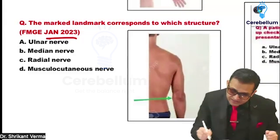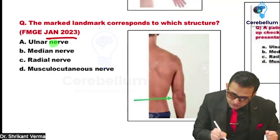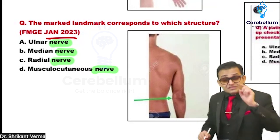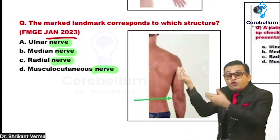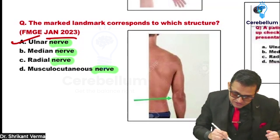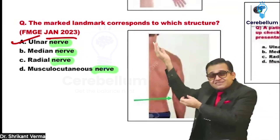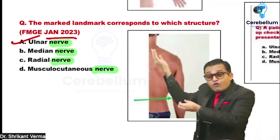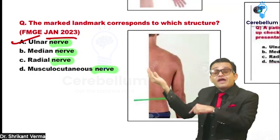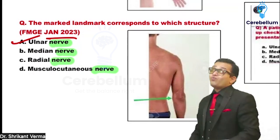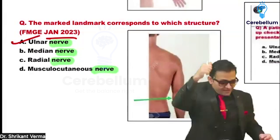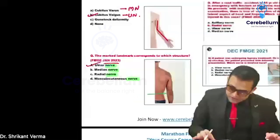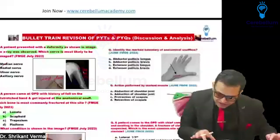FMG January 2023 again asks about nerve identification in the upper limb. Just behind the medial epicondyle is the ulnar nerve. There is a funny sensation behind the medial epicondyle — that is why the humerus is known as the 'funny bone,' due to the ulnar nerve passing there.